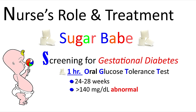Most pregnant women will be screened at about 24 to 28 weeks gestation. They'll have a one-hour oral glucose tolerance test, and fasting is not required for this test. They'll come in and drink about a 50-gram solution of glucose. One hour later, their blood will be drawn and the result will be abnormal if the glucose level is greater than 140 milligrams per deciliter.